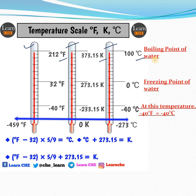The boiling point of water is 100°C, 373.15 K, and 212°F. The freezing point of water is 0°C, 273.15 K, and 32°F. At which temperature is degree Fahrenheit equal to degree Celsius?